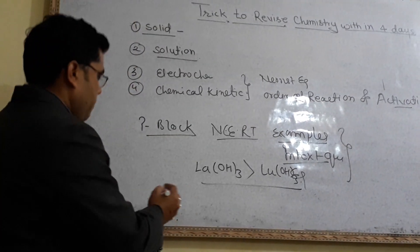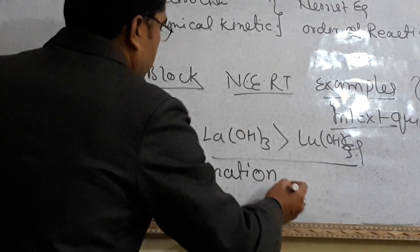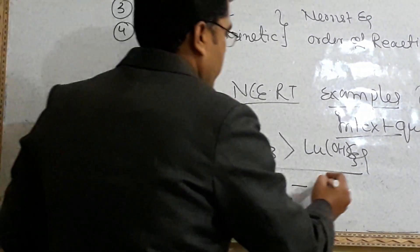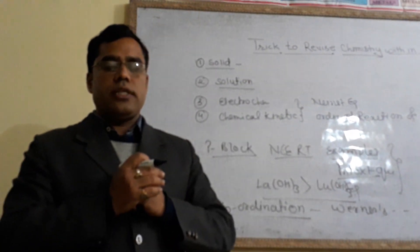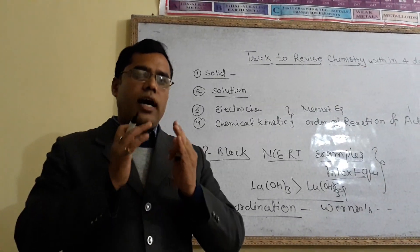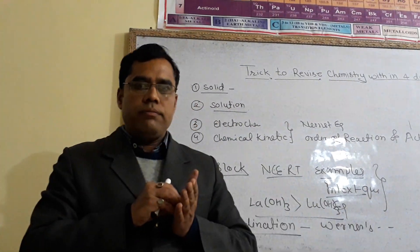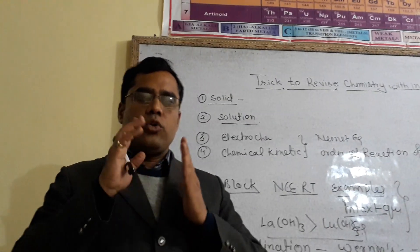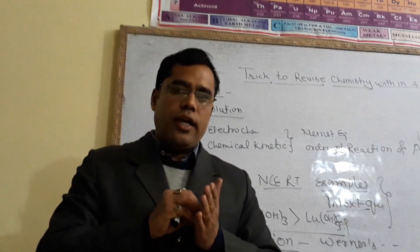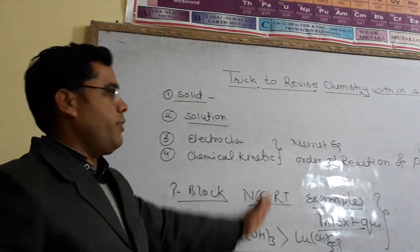From Coordination Chemistry, some important topics are Werner's coordination theory, chelating ligands, IUPAC nomenclature, and isomerism. Important questions include why Ni(CO)₄ is tetrahedral and diamagnetic, while NiCl₄²⁻ is tetrahedral but paramagnetic in nature. These types of questions you will get in the board examination from NCERT first volume. So students, revise all the topics thoroughly by using the examples of NCERT, in-text questions of NCERT, and questions related to the exercise.